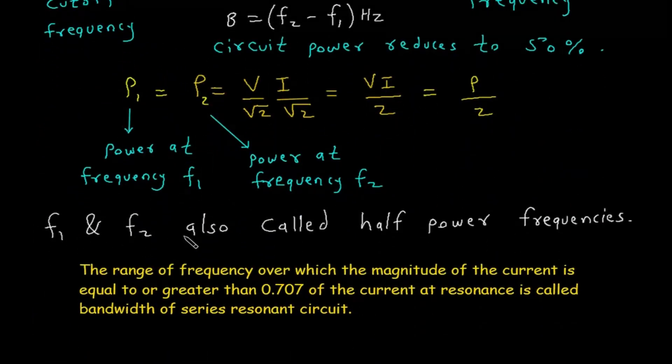F1 and F2 are also called half power frequencies. The range of frequency over which the magnitude of the current is equal to or greater than 0.707 of the current at resonance is called the bandwidth of a series resonant circuit.